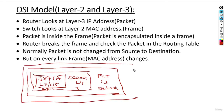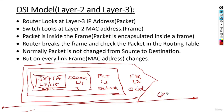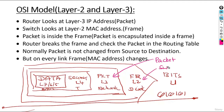The packet is encapsulated inside a frame at Layer 2, which is called the data link layer. The frame is then sent on the wire as bits at Layer 1 — the physical layer. So the flow is: data to segment, segment to packet, packet to frame, frame to bits. The router will break the frame and look into the packet. In a LAN environment, a switch looks at the frame because the IP address is in the packet and the MAC address is in the frame. Router looks at Layer 3 IP addresses; switch looks at Layer 2 MAC addresses.